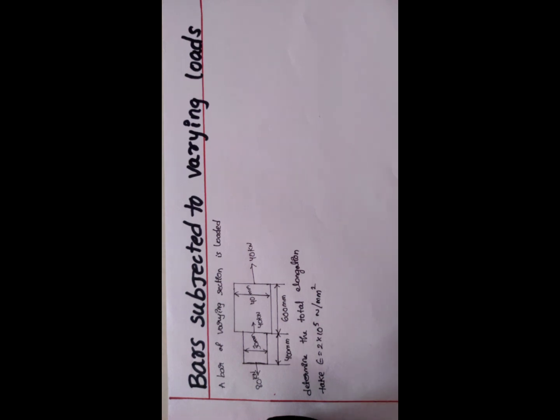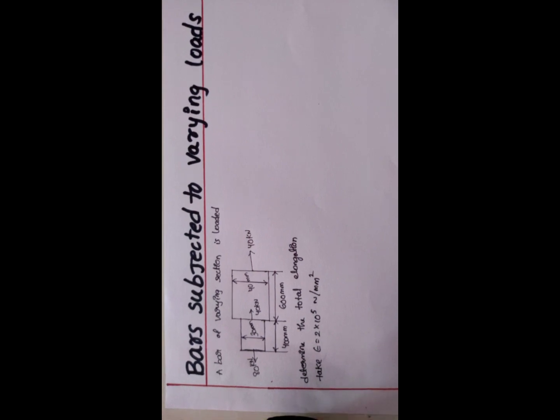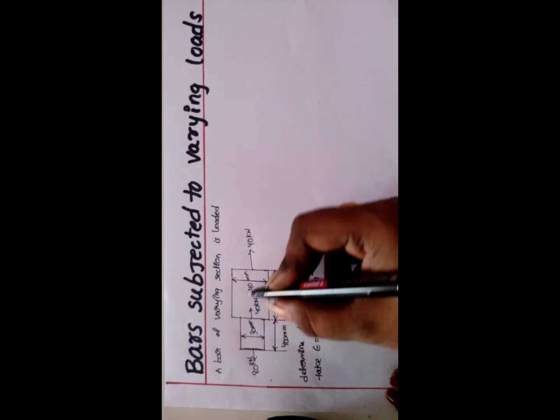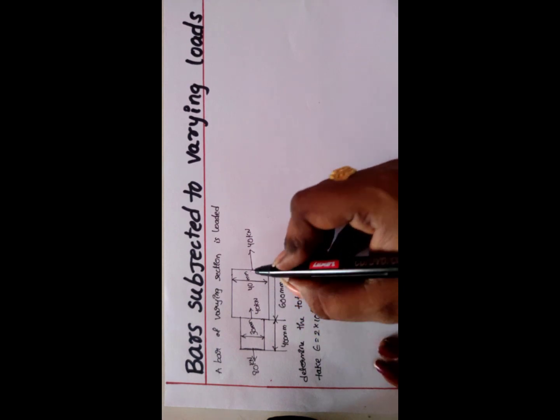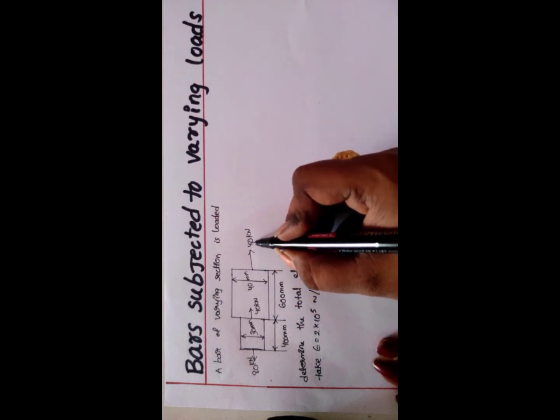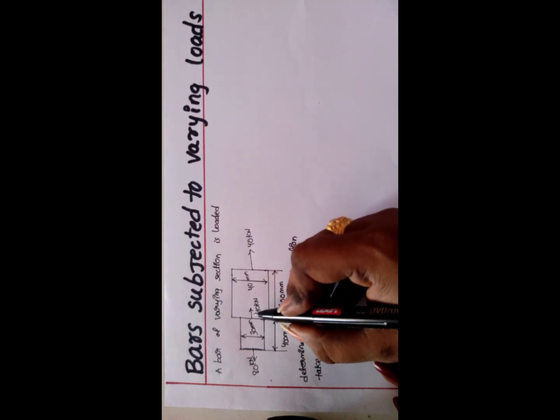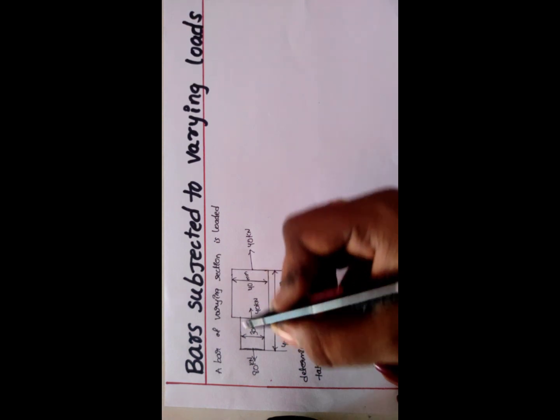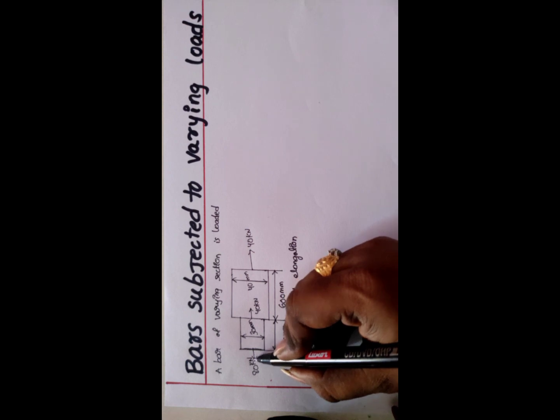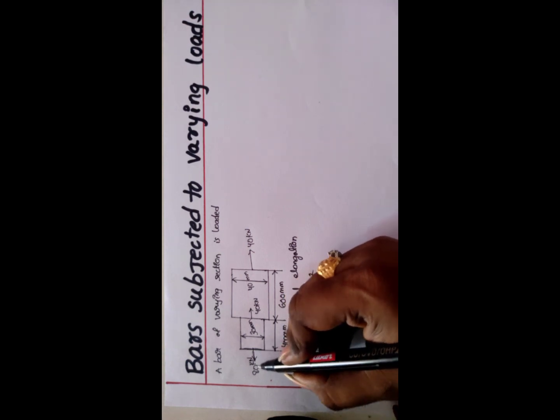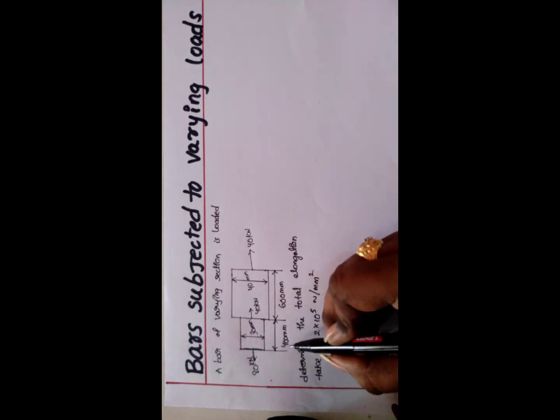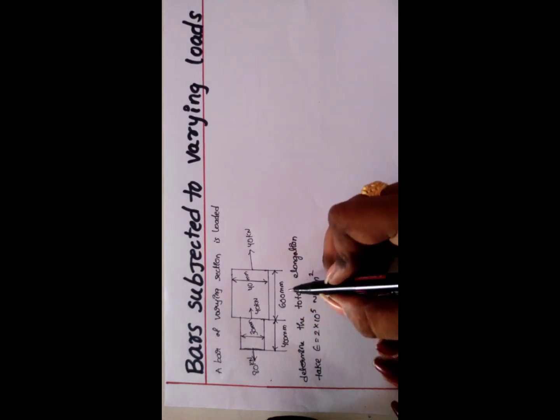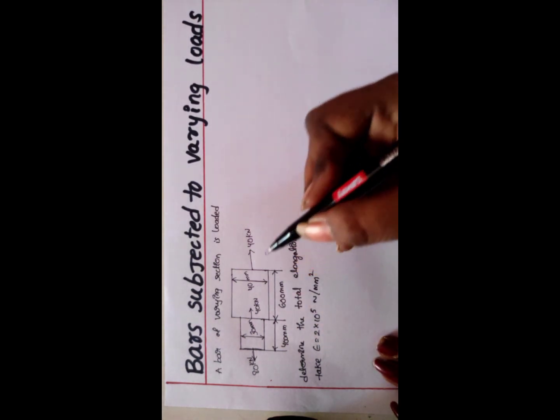Now let's take a look. This varying bar element - this side is 40 kN, this side is 40 kN, this side is small diameter. This bar is 80 kN with a length of 400 mm and 600 mm.